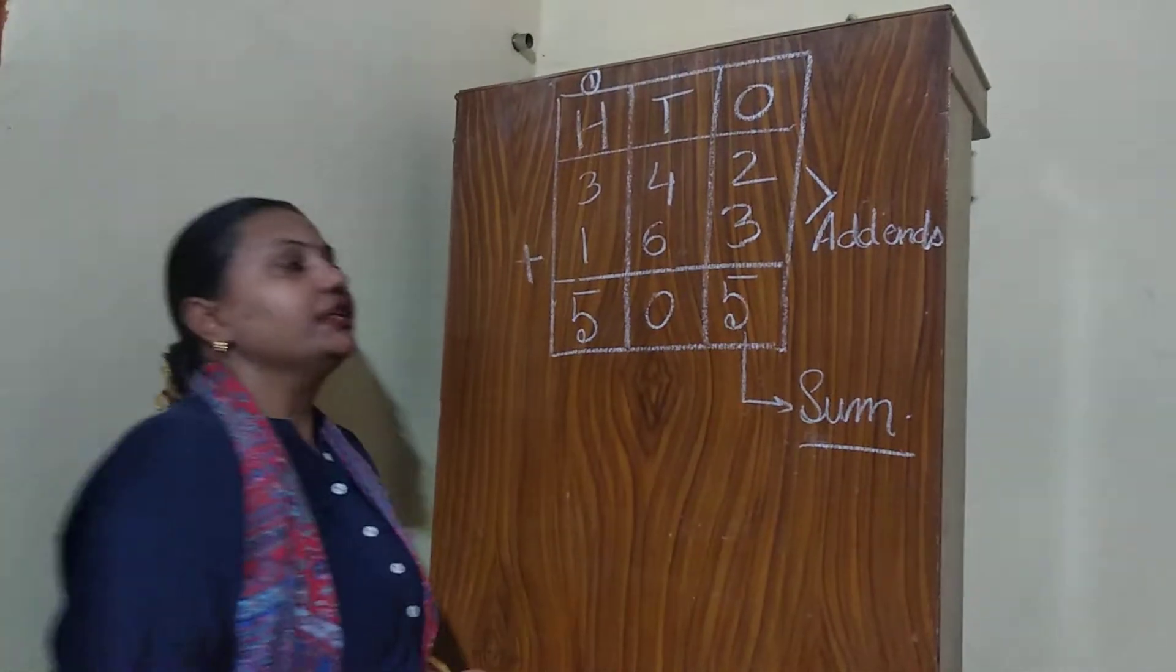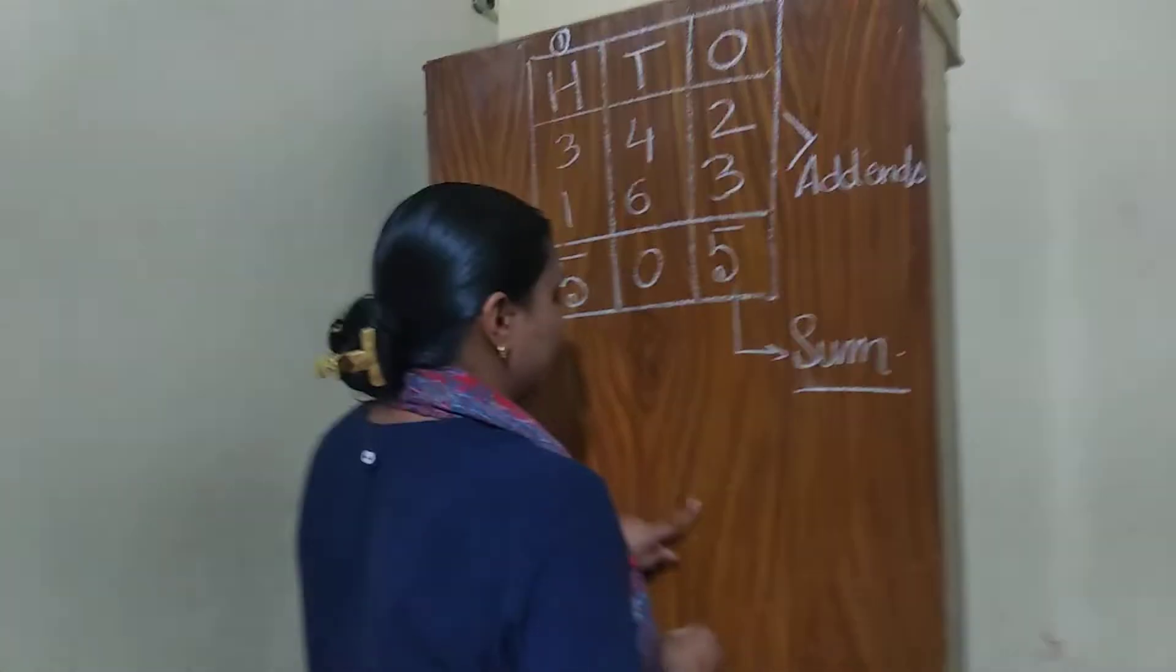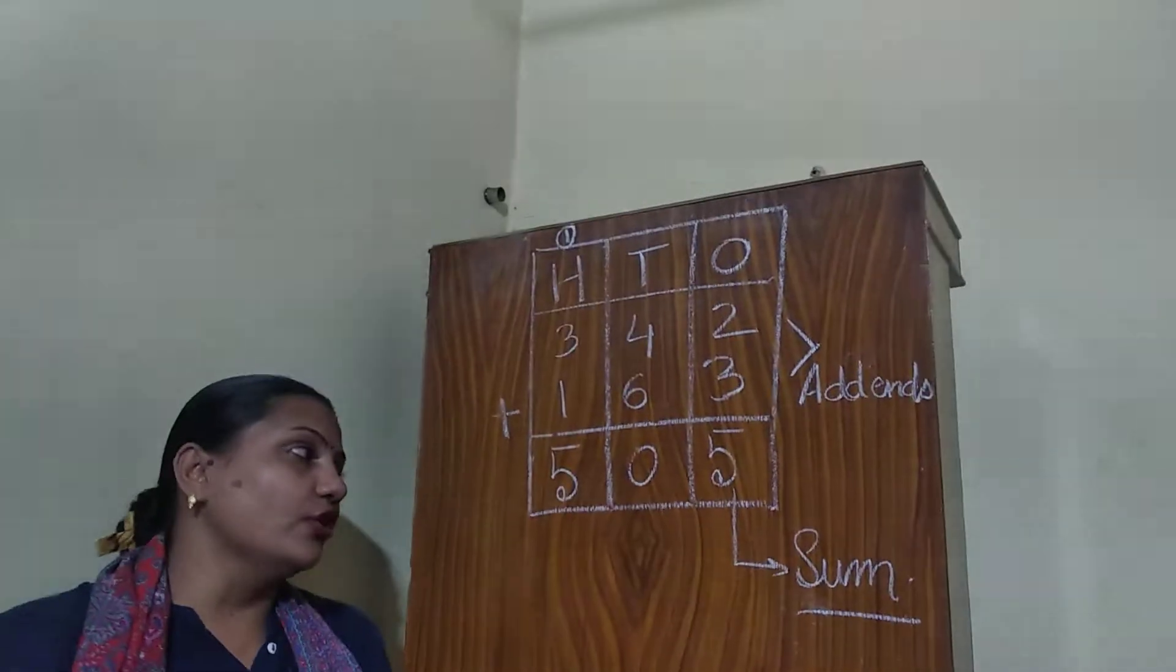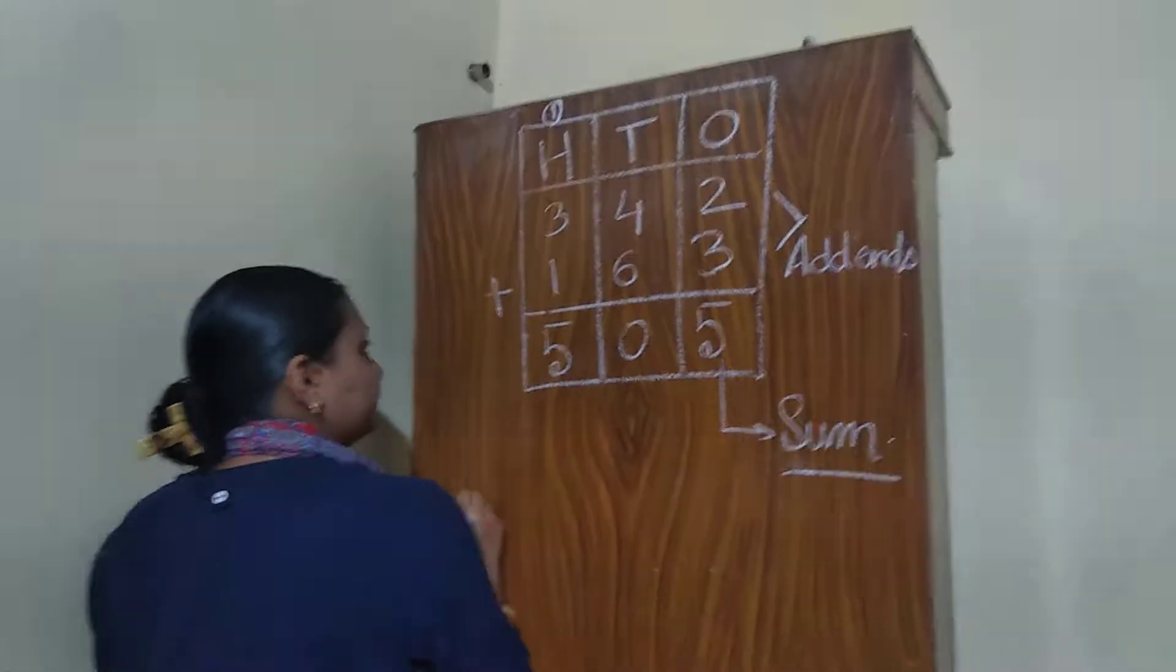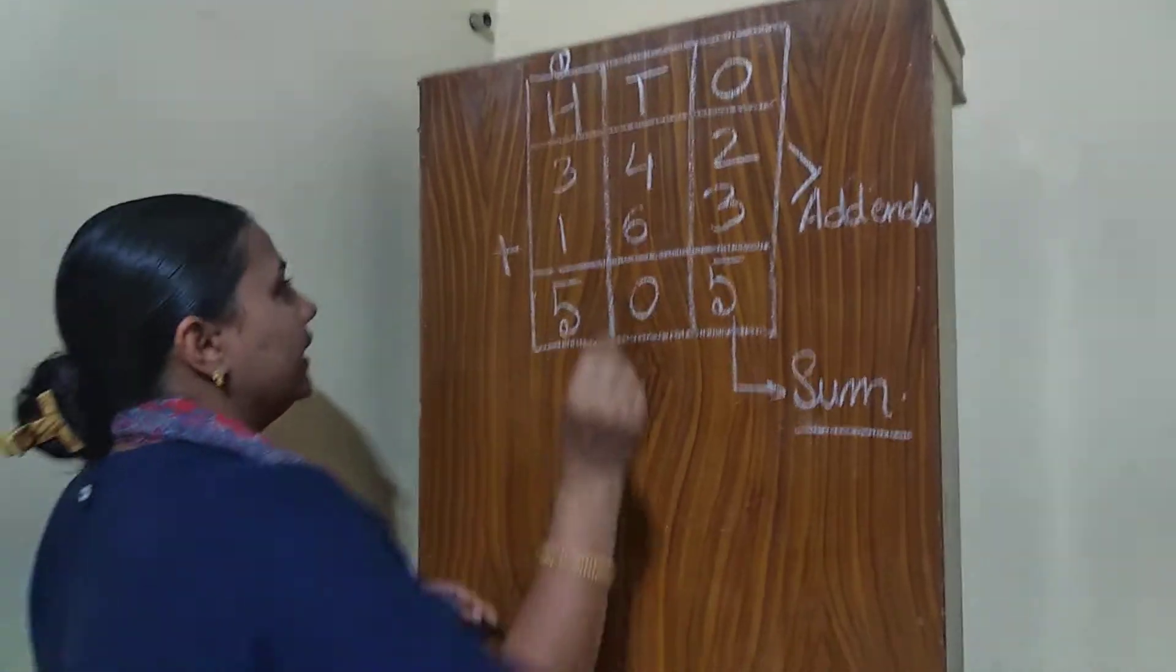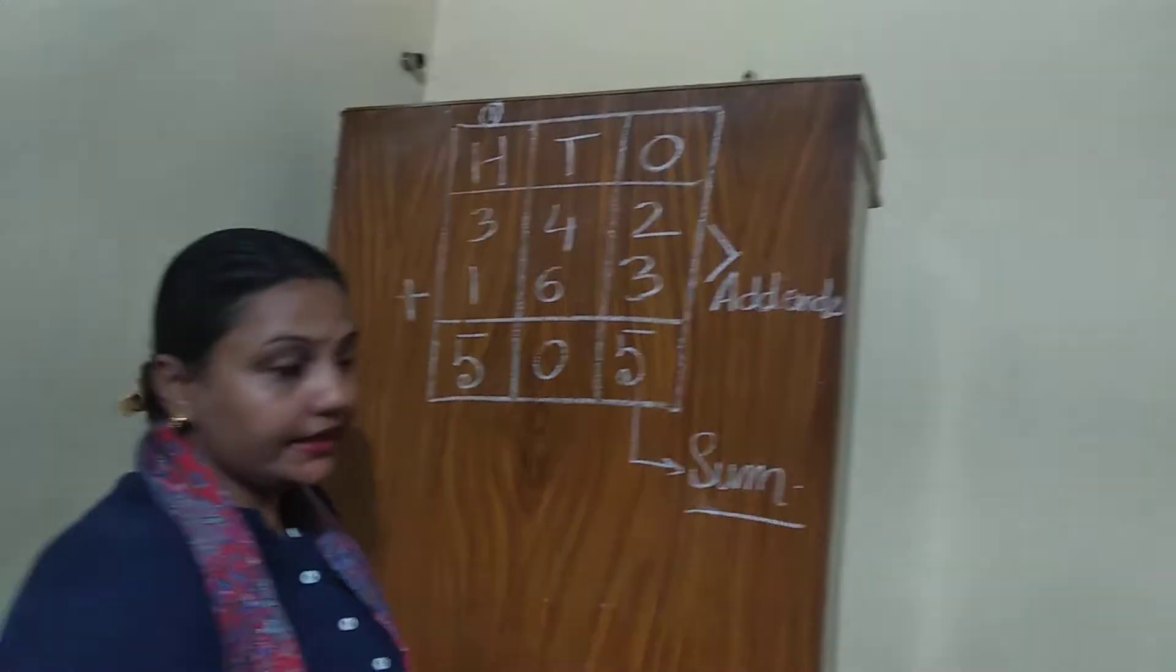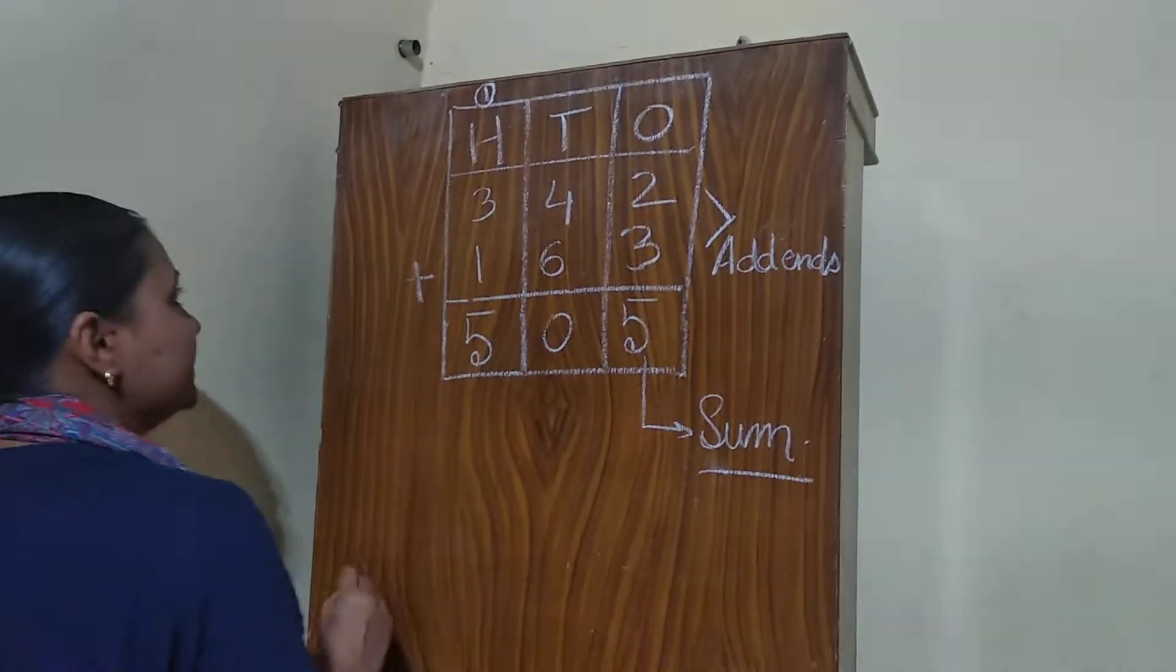That also we need to remember. Now, second thing, what we have to learn that, if we change the order of the addends, then also the sum will be same. Let us see, if I change 163 in place of 342 and if I write 342 in place of 163, then also the answer will be 505. Let us see,